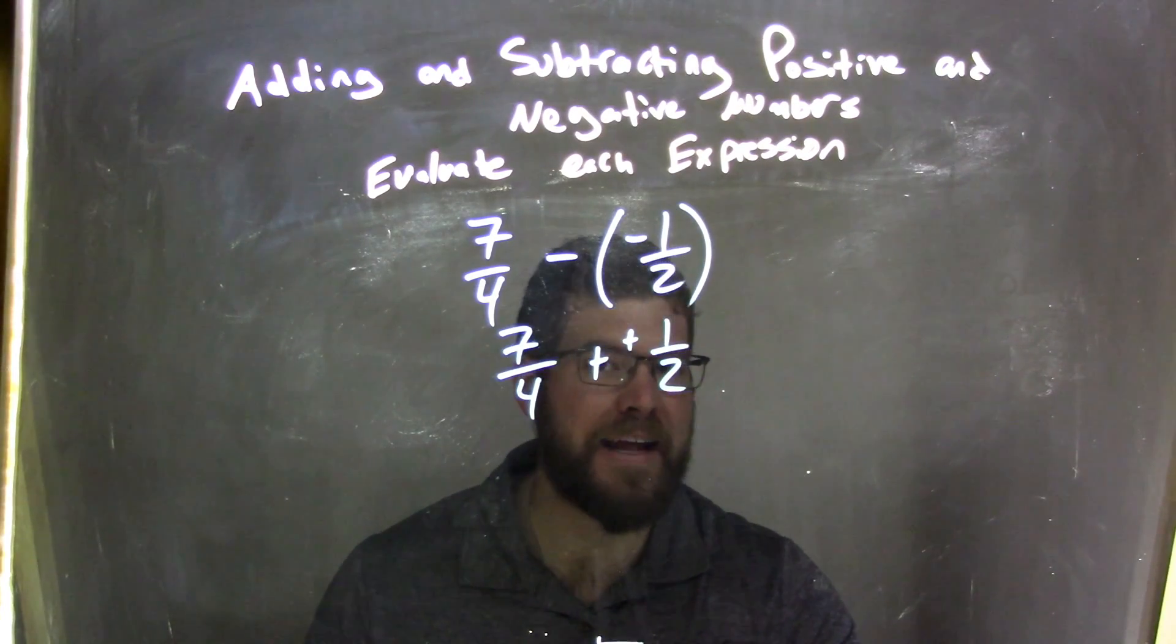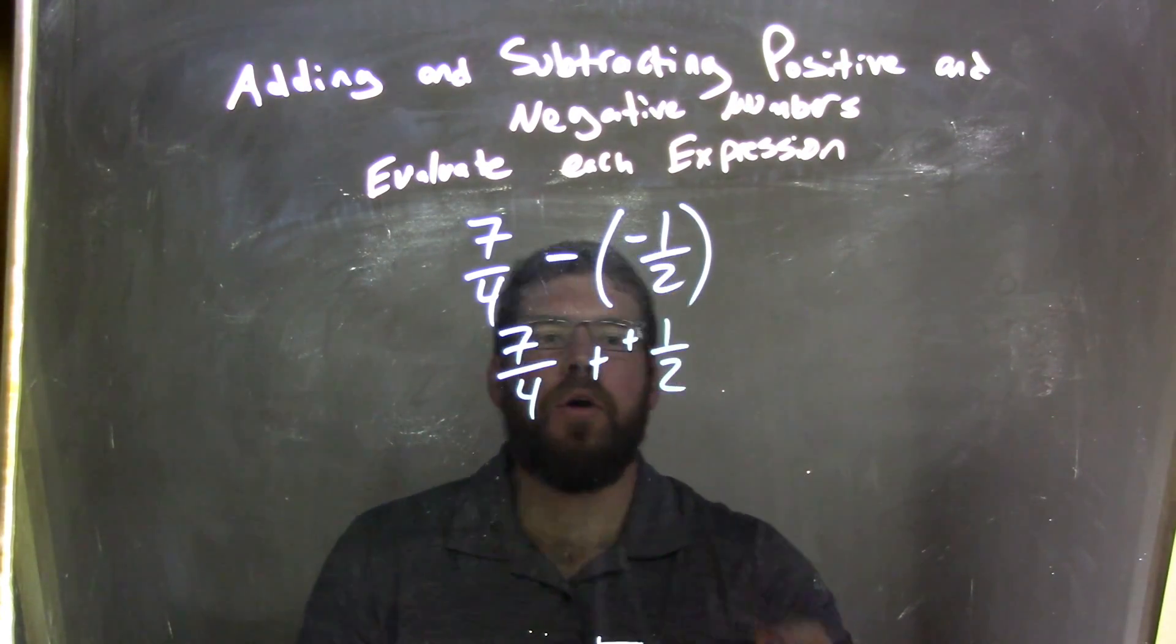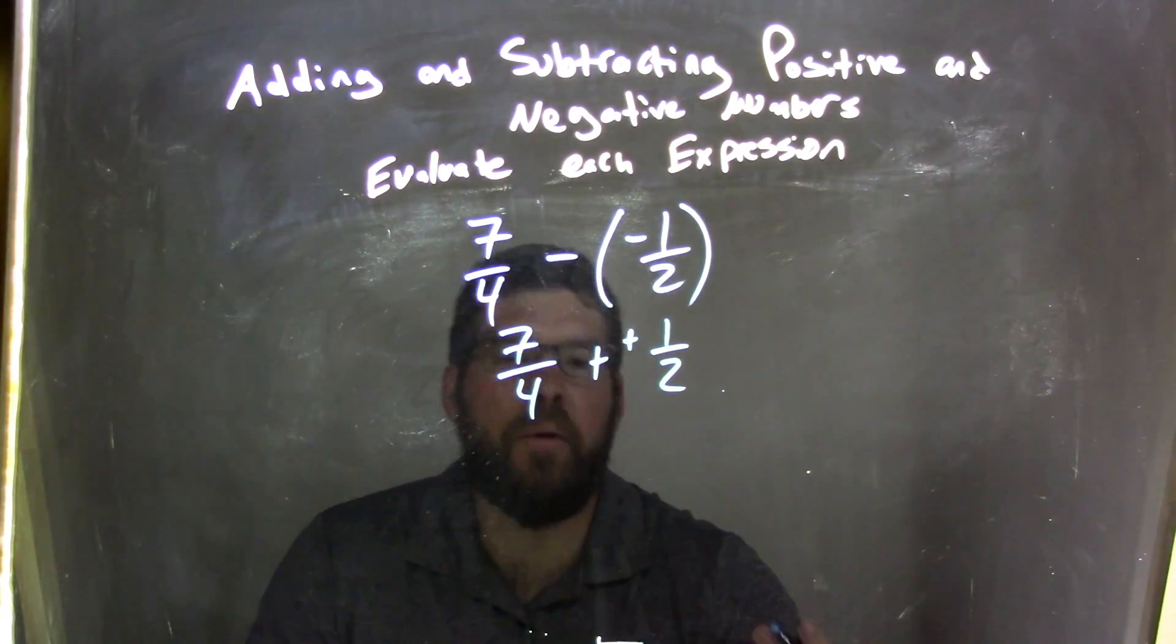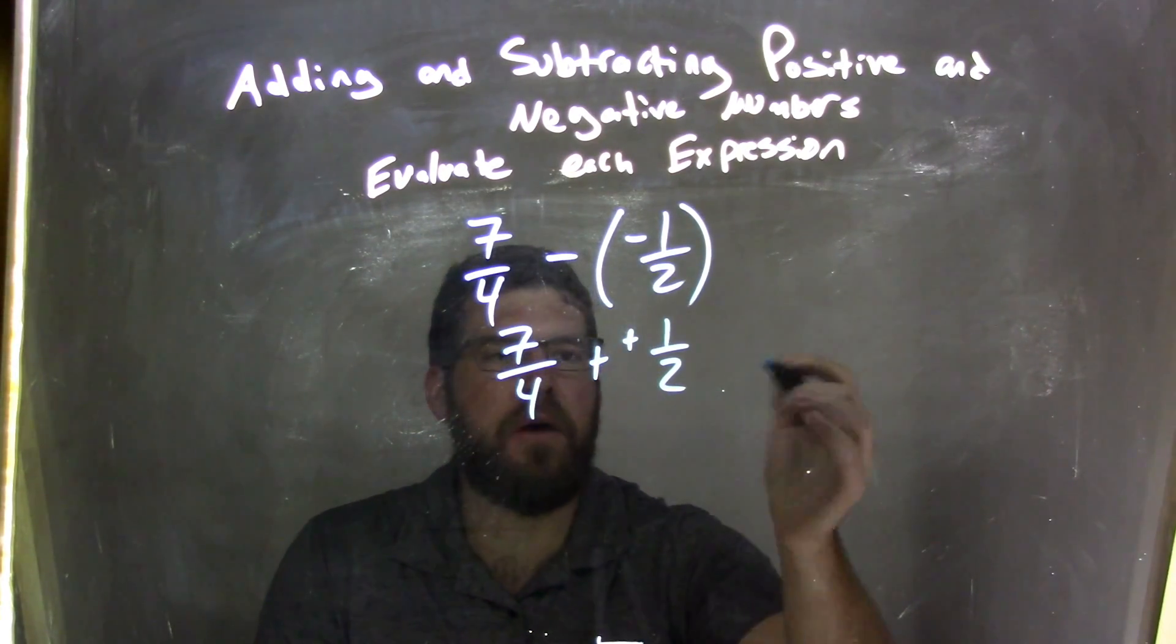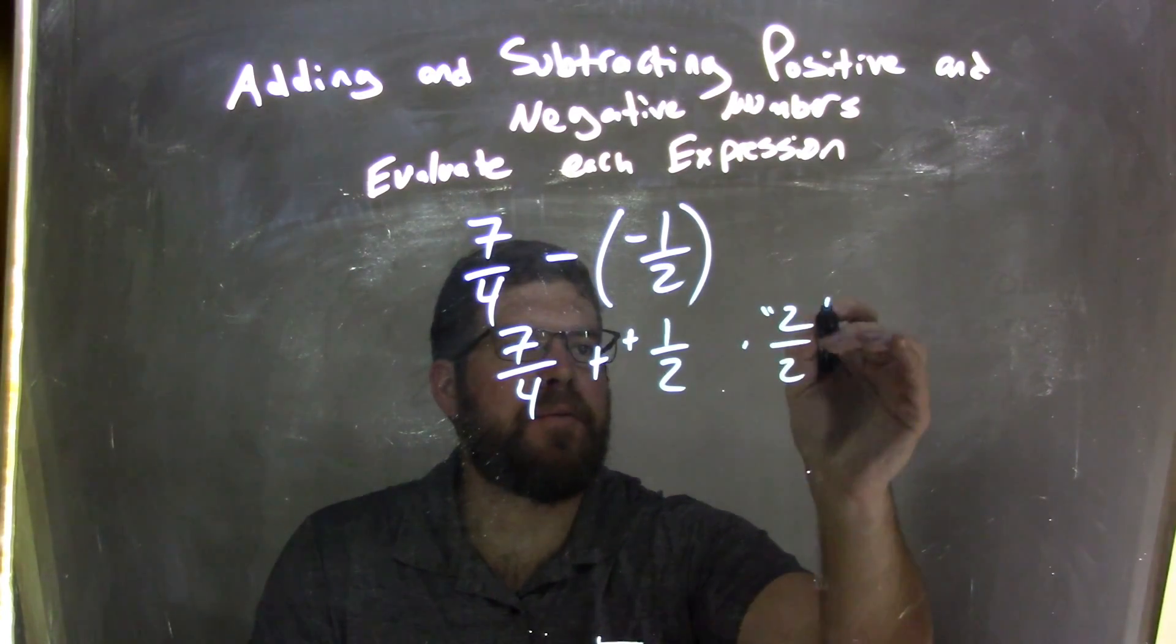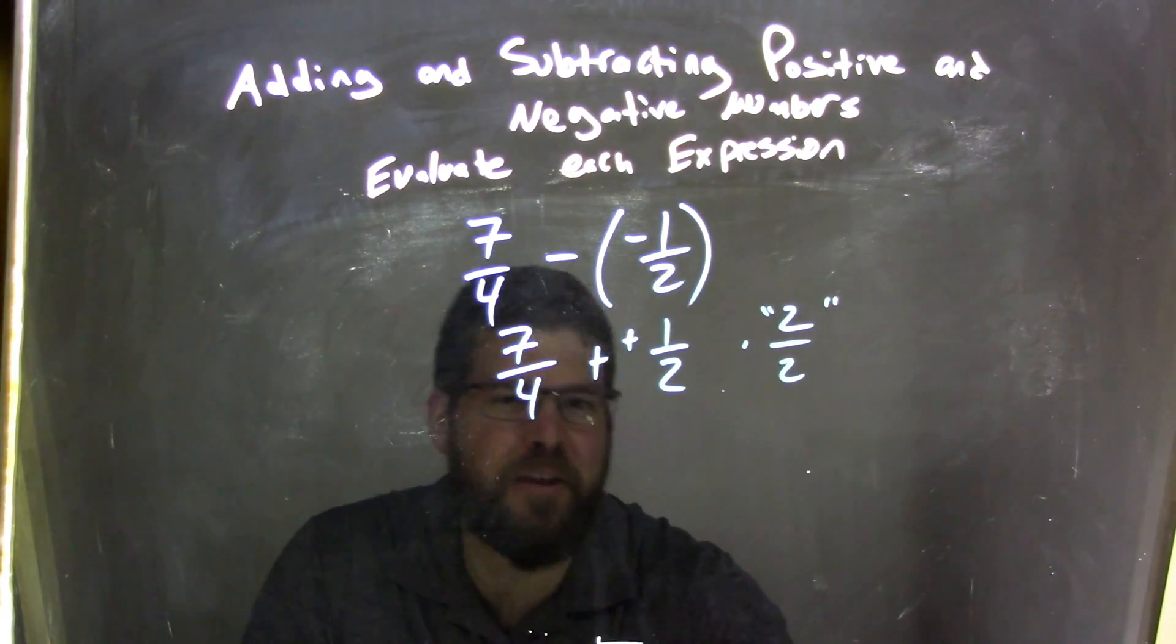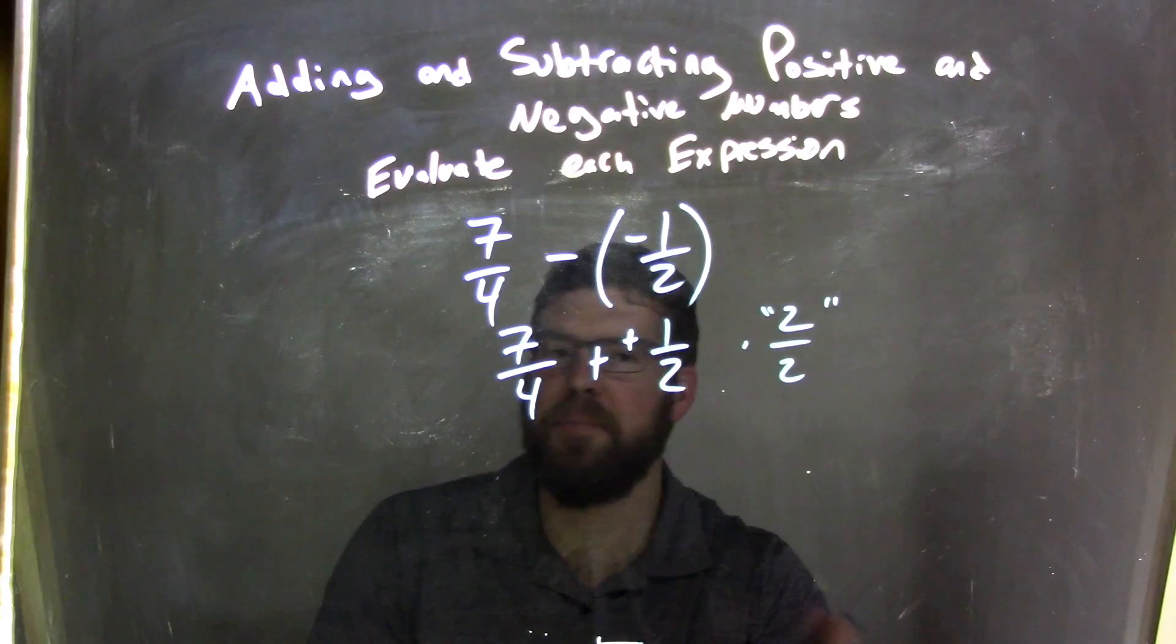So to add these two fractions, I need to find a common denominator. 2 and 4 both go into 4. 4 one time, so we don't need to change anything, but 2 two times. So this here, I can multiply by 2 over 2, and this right side, I don't need to do anything, it's really just 1 over 1 if you want to, but I'm going to leave it.